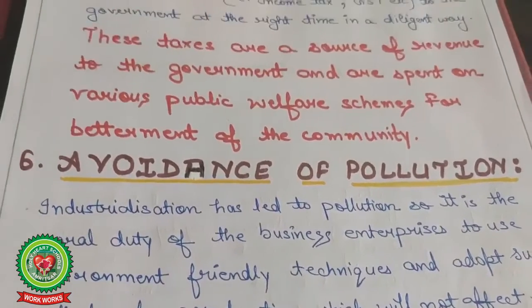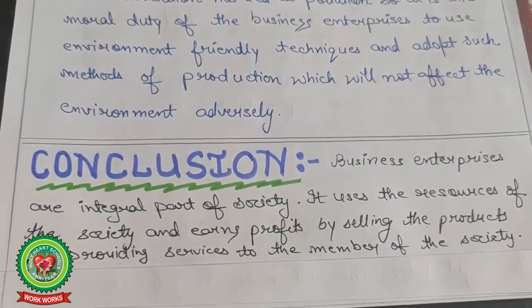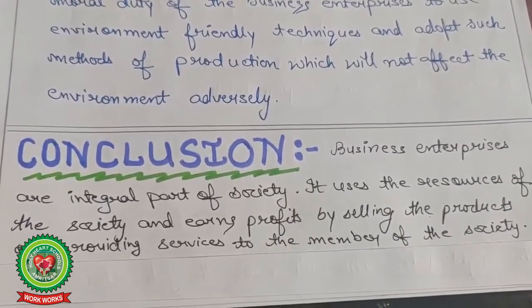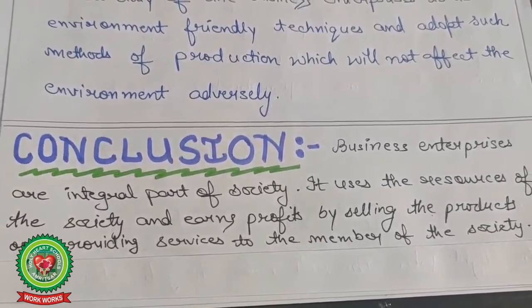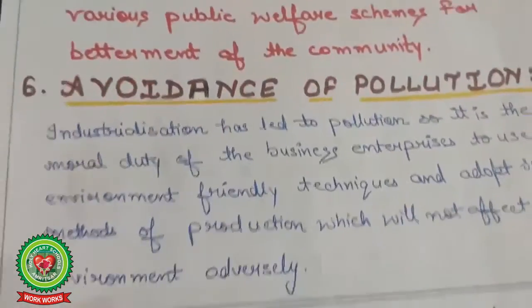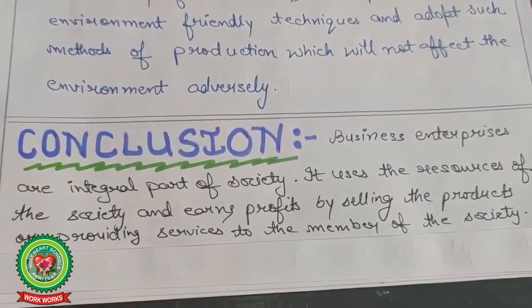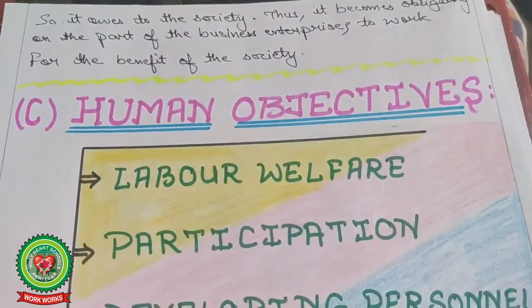These are all the social objectives of business. In conclusion, business enterprises are an integral part of society. They use the resources of society and earn profit by selling products or providing services to the members of society. It is therefore the responsibility of the business to provide something back to the society out of the profits. It thus becomes obligatory on the part of business enterprise to work for the benefit of society.